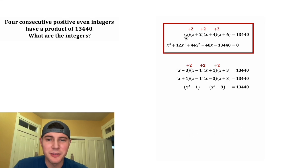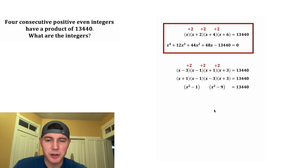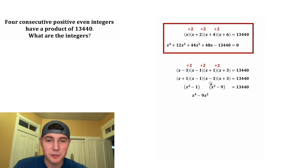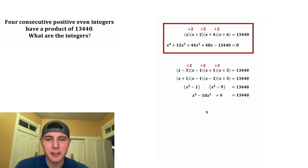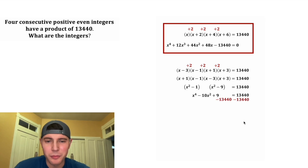Multiplying these out is significantly easier. x squared times x squared is x to the fourth, x squared times negative nine is negative 9x squared, negative one times x squared is negative x squared, and negative one times negative nine is positive nine. Combining like terms: negative 9x² minus x² gives negative 10x².